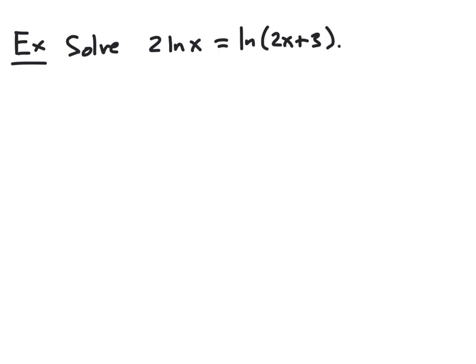In this example, we'd like to solve the equation 2 natural log x equals the natural log of 2x plus 3. This is almost in the correct form for the one-to-one property, except the left side has a coefficient of 2 in front of the natural log. Fortunately, we can move that coefficient into an exponent using the power rule of logarithms, so 2 natural log x condenses into the natural log of x squared.